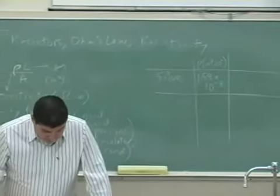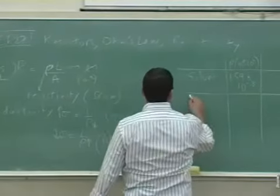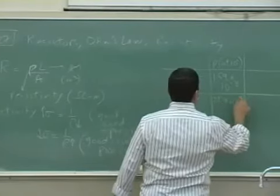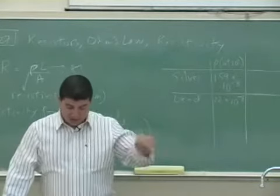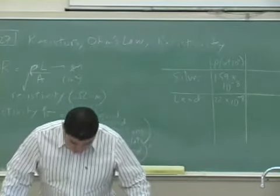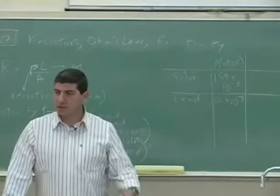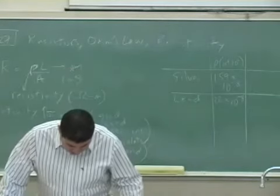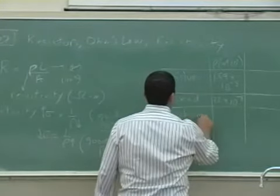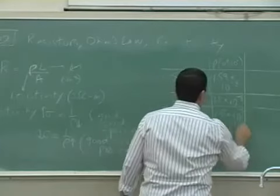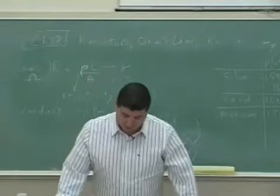And then the biggest one would be lead. And then the next one they give you is nichrome, which is a nickel-chromium alloy, commonly used in heating elements, like let's say in your thermos or whatever, some kind of heating element. And this is 1.50 times 10 to the negative 6.